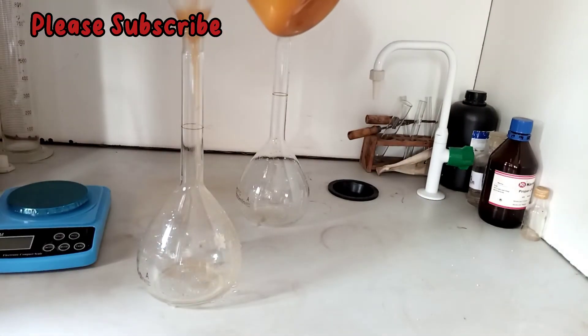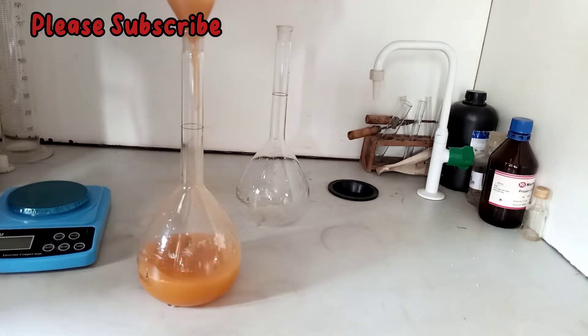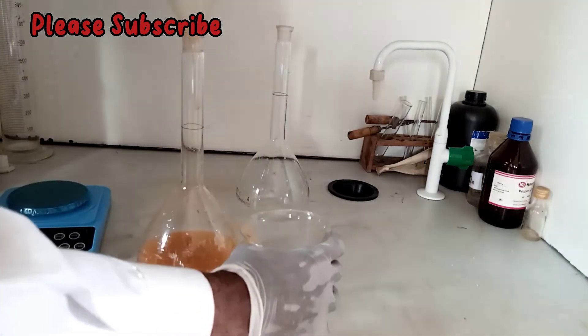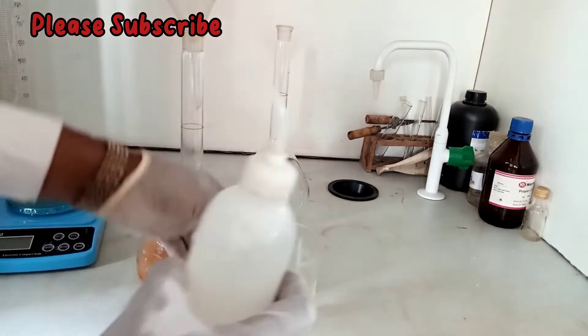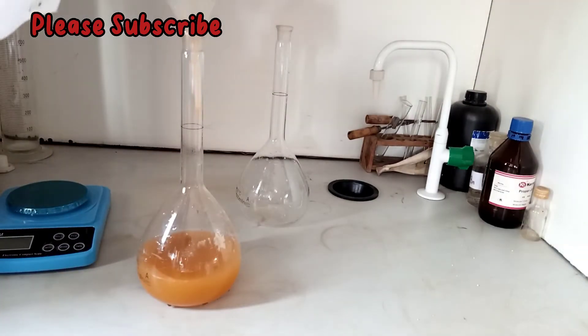First by pouring the solution into the standard volumetric flask, and then you add distilled water to the 1000 cm³ mark. And that is how we prepare 0.1 mole of iron sulfate heptahydrate. You rinse out the particles left thoroughly into the standard volumetric flask.